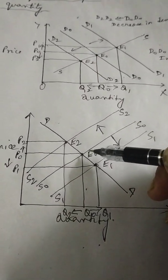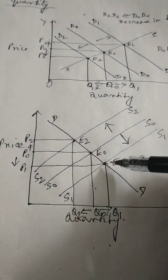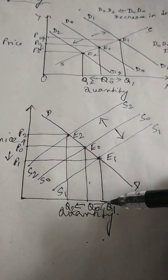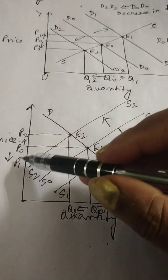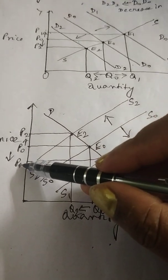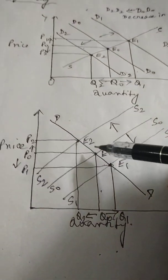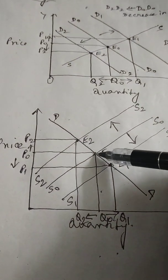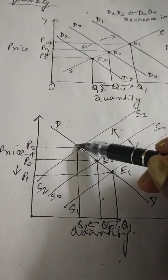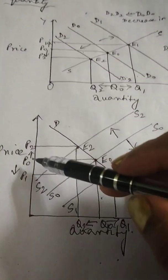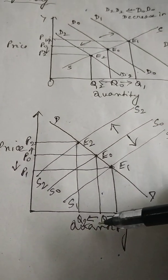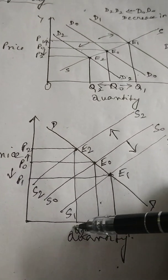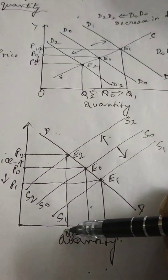Equilibrium quantity now falls to Q2 but equilibrium price increases to P2. Increase in supply increases equilibrium quantity but reduces price, whereas decrease in supply increases price but reduces equilibrium quantity.